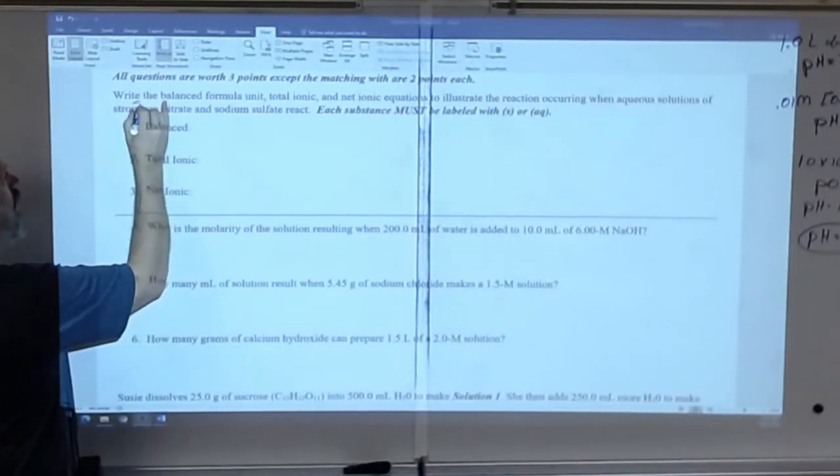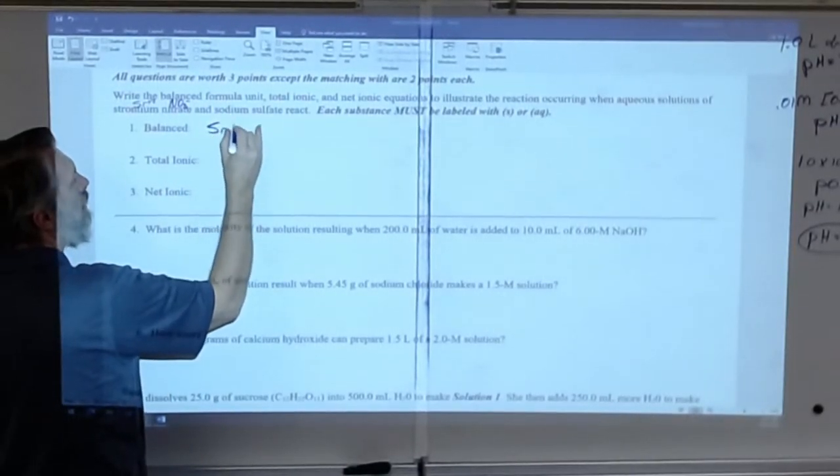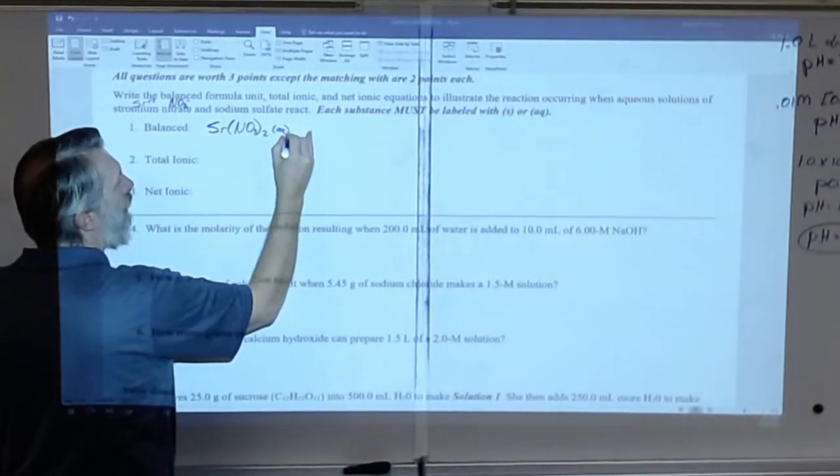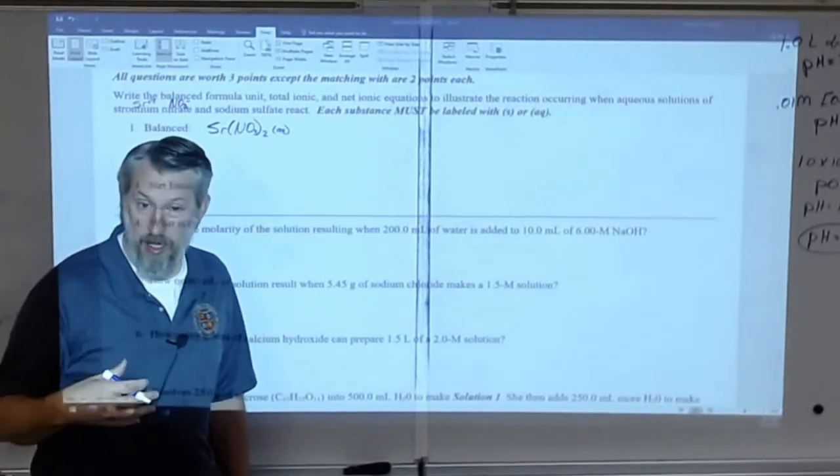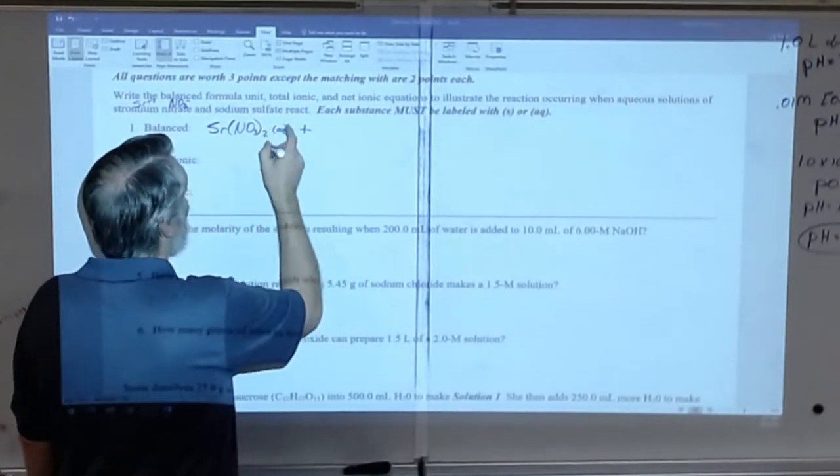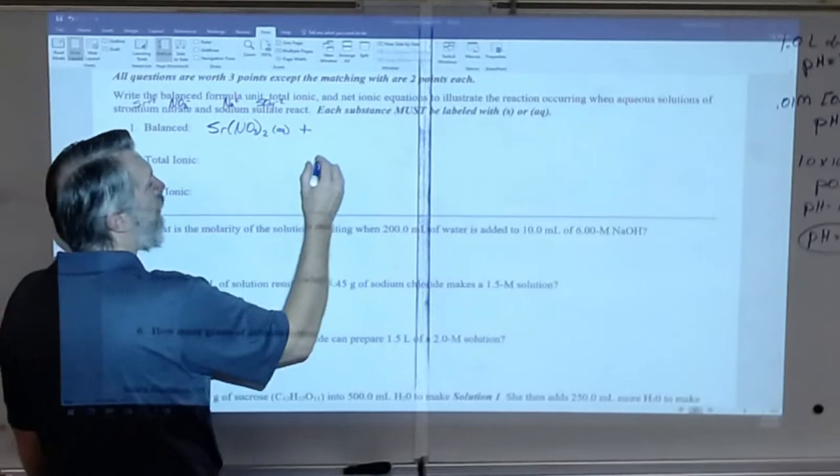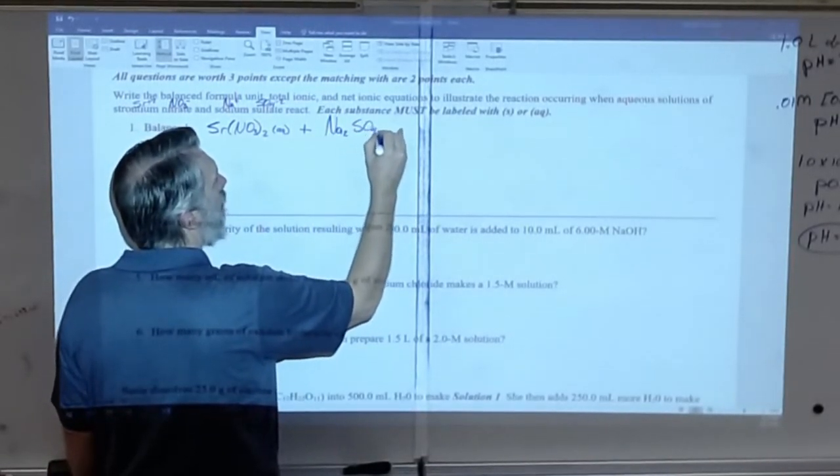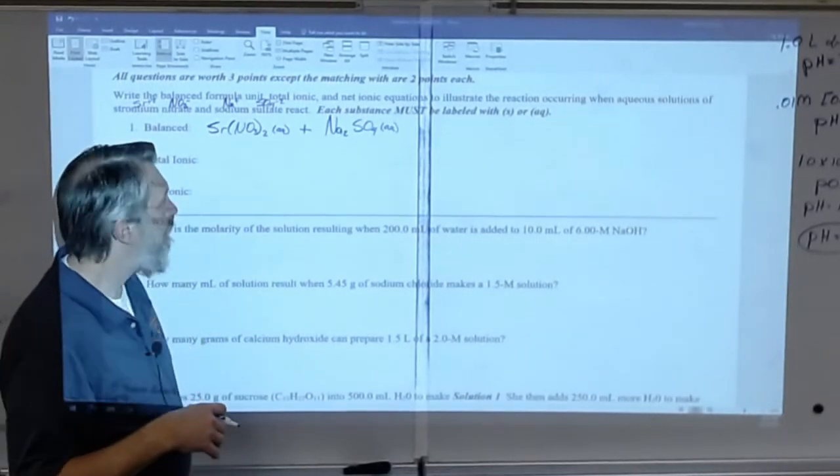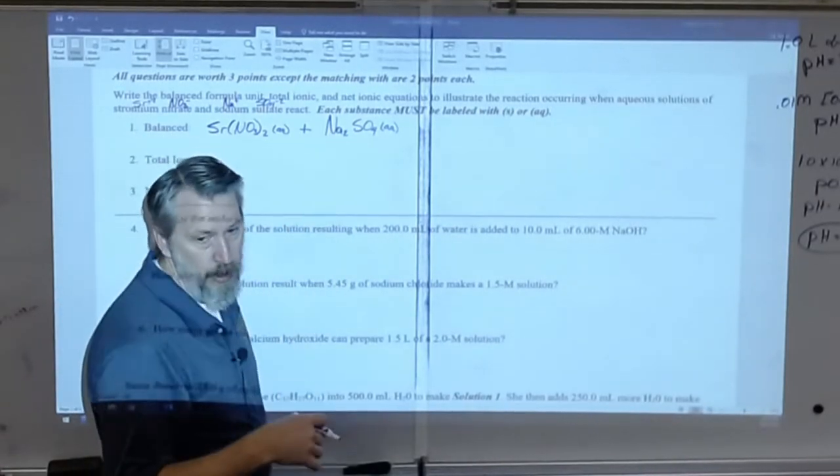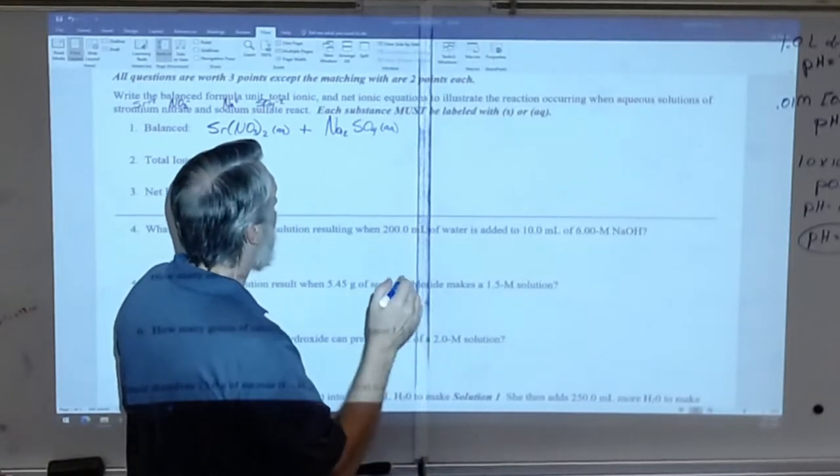So strontium, Sr plus two, nitrate you guys all remember is NO3 minus one. Crisscross, this is Sr(NO3)2 and this is aqueous. You have to have labeled this with S or AQ. I need every substance labeled. Okay, sodium sulfate. Sodium is Na, it's plus one. Sulfate is SO4 minus two. I'm going to crisscross that. That's Na2SO4 and it's also aqueous.